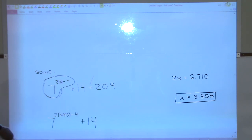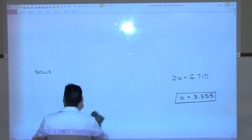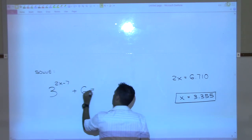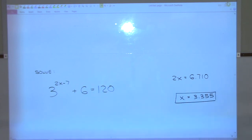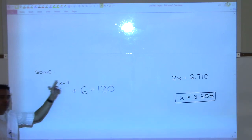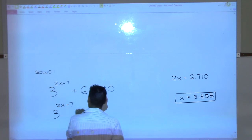There's one on the review for the final. It's 3^(2x − 7) + 6 = 120. First step — Tanisha, what do I do first? Subtract 6, right? Because we see it's an exponential equation and we're trying to isolate the exponential term. So we subtract 6 on both sides, giving 3^(2x − 7) = 114.